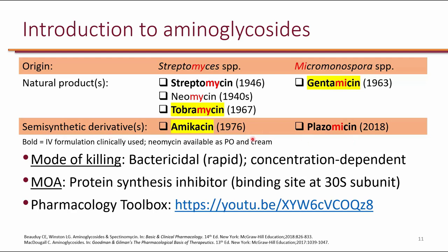Aminoglycosides are available as IV formulations, with the exception of neomycin, which is available as oral and also in a cream formulation. Aminoglycosides have concentration-dependent rapid bactericidal activity against gram-negative organisms. They inhibit protein synthesis by primarily binding to the 30S subunit of the ribosome. For more details on pharmacology of aminoglycosides, please refer to the pharmacology toolbox and the video Dr. Nguyen has developed.